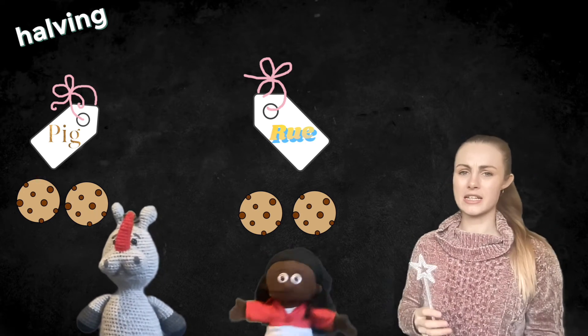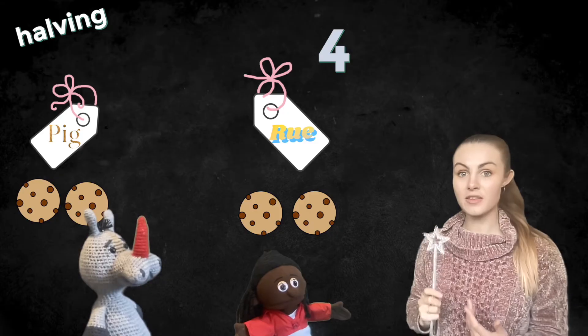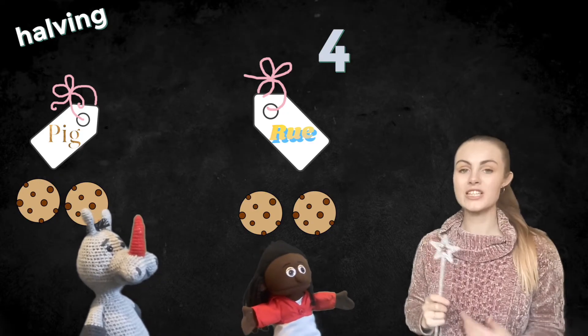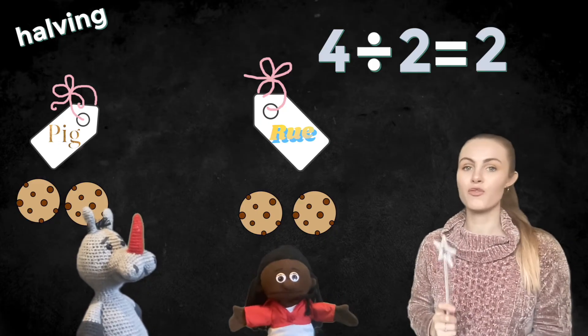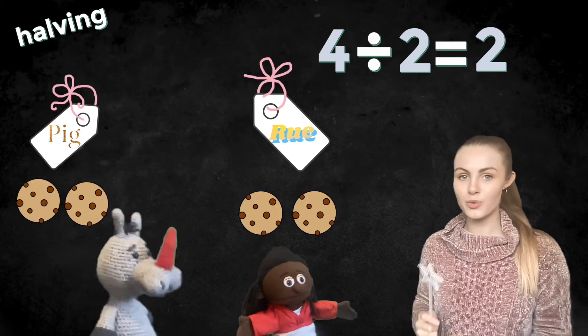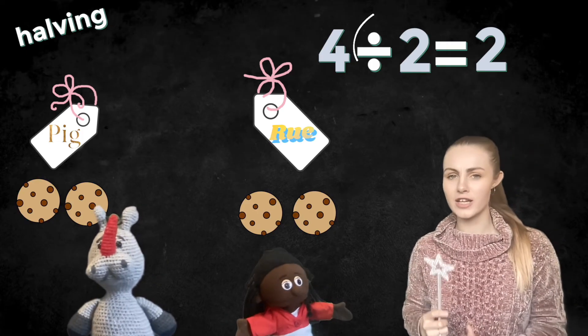So how do we write this as a number sentence? Well we started with four and then we shared them equally between two people. So we divided by two and then each person ended up with two. So four divided by two equals two. That means that halving is the same as dividing by two.